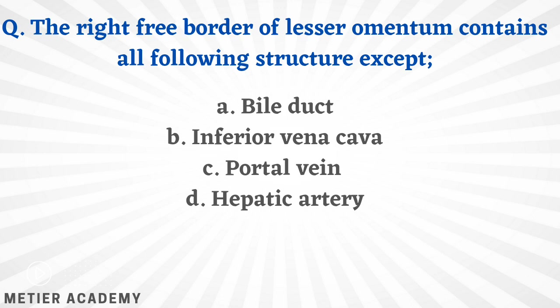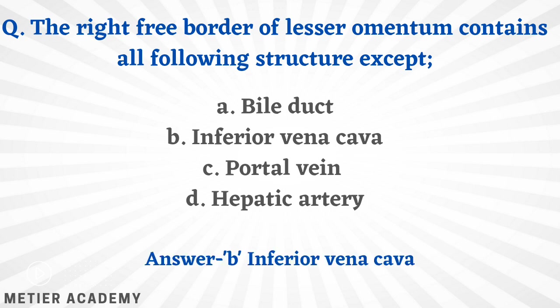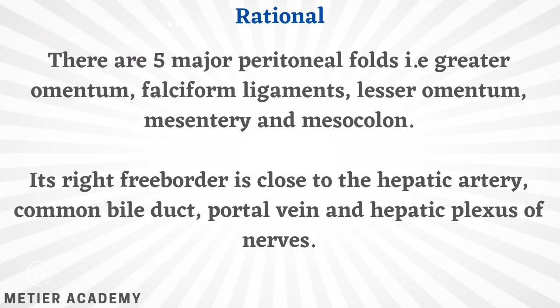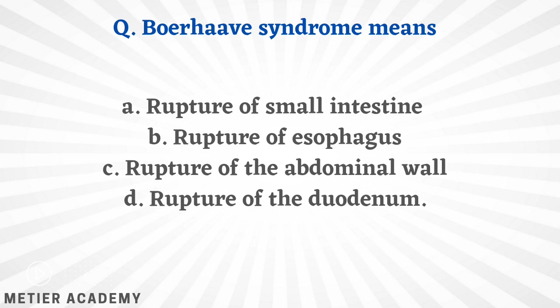Next: the right free border of the lesser omentum contains all of the following structures except — bile duct, inferior vena cava, portal vein, or hepatic artery? The correct answer is option B, inferior vena cava. There are five major peritoneal folds: greater omentum, falciform ligament, lesser omentum, mesentery, and mesocolon. The lesser omentum's right free border is close to hepatic artery, common bile duct, portal vein, and hepatic plexus of nerves — not inferior vena cava.